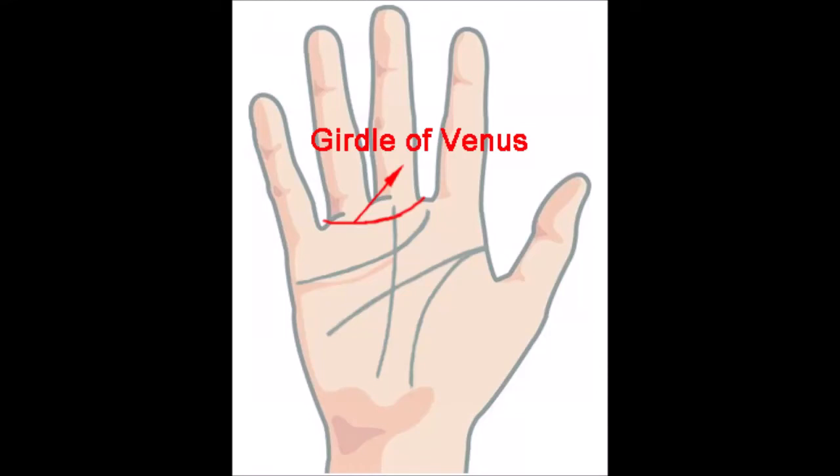The girdle of Venus is that broken or sometimes unbroken semicircular line that is found rising from the base of the first finger to the base of the fourth.